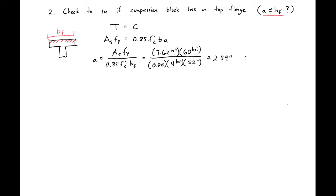We can find our A to be 2.59 inches. And we can compare this to our H sub F of 3 inches. And we'll see that our compression block does indeed lie within our top flange. So we can move forward and analyze the section as just a rectangular section.